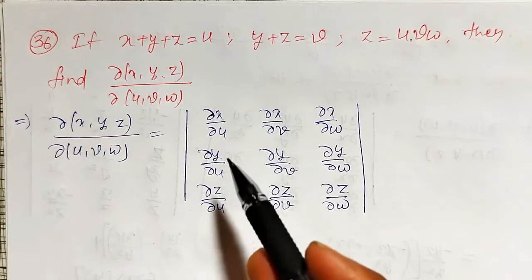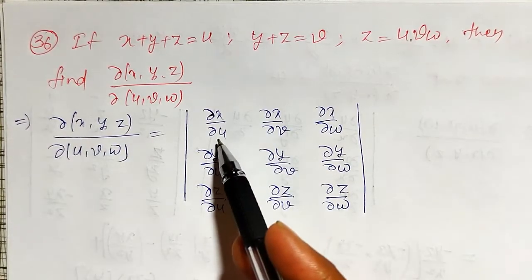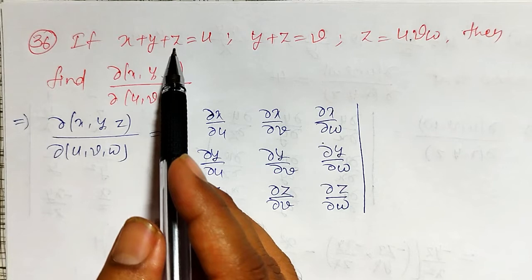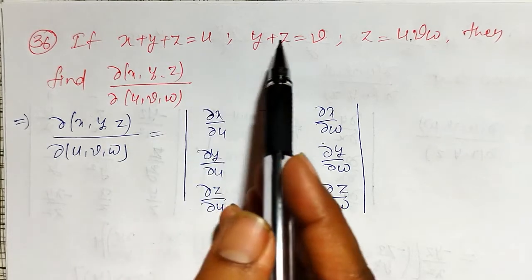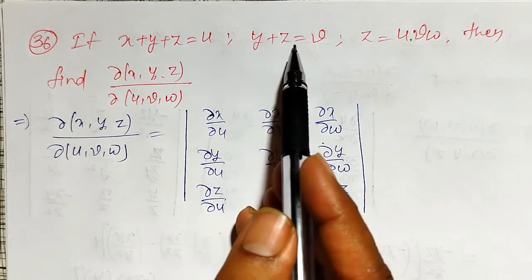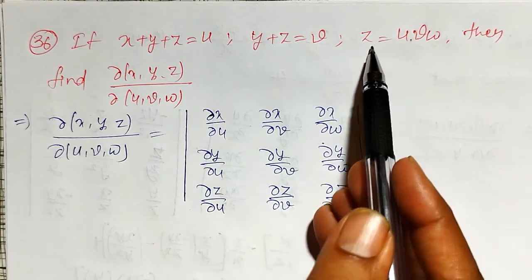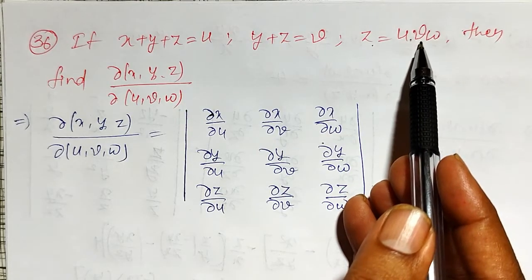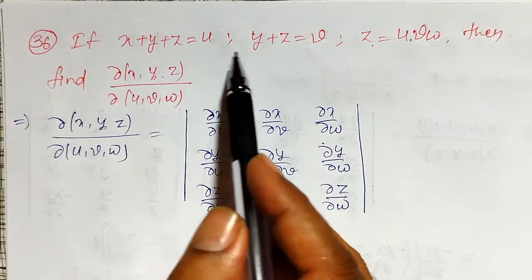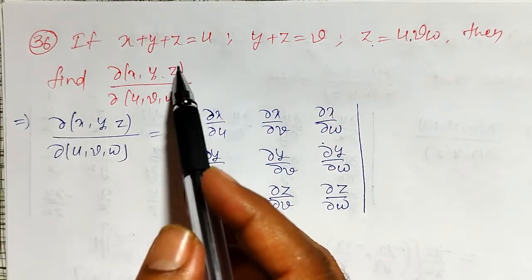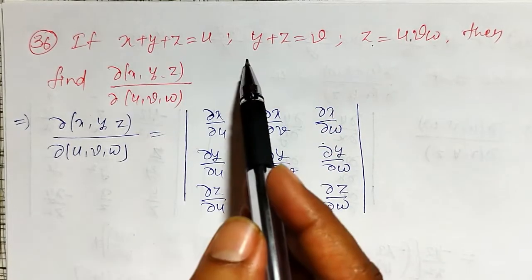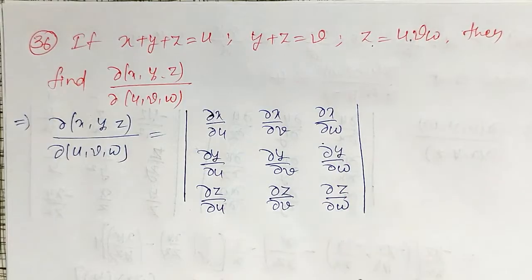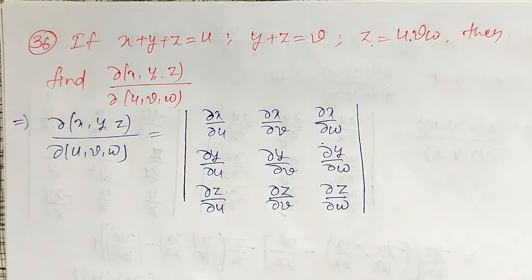Now, to find all these partial derivatives, x should be a function purely of u, v, w; y should be a function of u, v, w. But here only z is a function of u, v, w. That's why I have to convert the given functions: x in terms of u, v, w; y in terms of u, v, w; and z in terms of u, v, w.